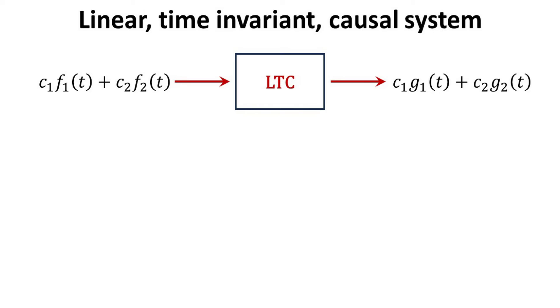A system is linear if and only if it satisfies the superposition principle, which means that a linear combination of inputs Ft to the system produces a linear combination of the individual outputs Gt.